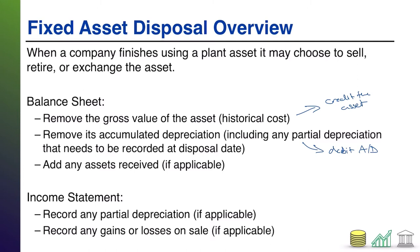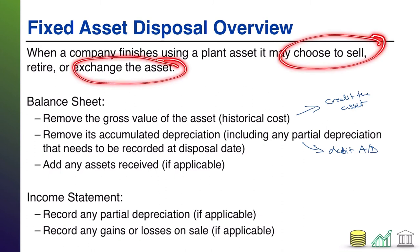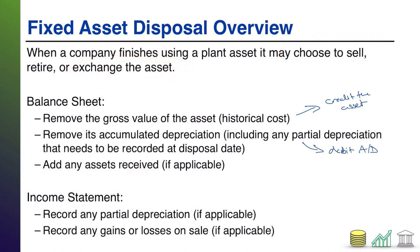And of course, if you are in a situation where you were either selling for cash or exchanging for some other asset, you've got to go ahead and record any asset received. So if you're selling, debit cash; if you're exchanging for a piece of equipment, debit equipment, and so forth.